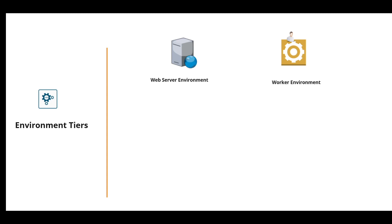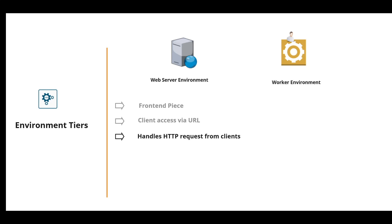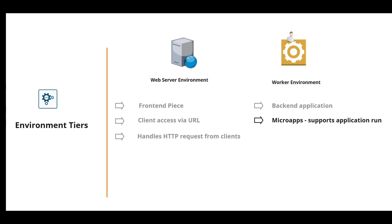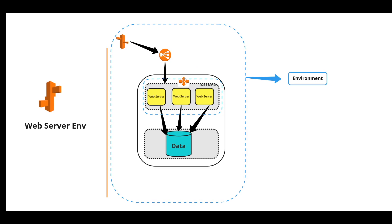You choose either the Web Server Environment or, if your application needs to handle background processing tasks, the Worker Environment Tier. The Web Server Environment is the client-facing front-end piece — every environment has a URL and a CNAME that points to the load balancer. The web server handles HTTP requests from clients. The Worker Environment is the back-end application that facilitates back-end tasks and jobs, running micro-apps or supporting the application's execution.